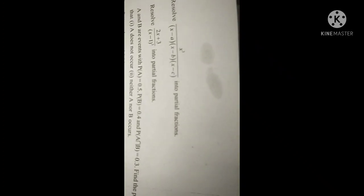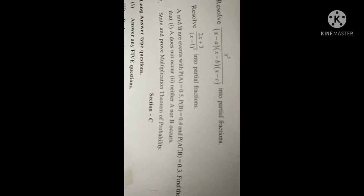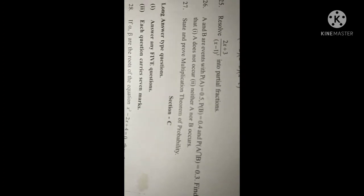Question 24: Resolve x³/[(x - a)(x - b)(x - c)] into partial fractions. Question 25: Resolve (2x + 3)/(x - 1)³ into partial fractions. Question 26: A and B are events with P(A) = 0.5, P(B) = 0.4, P(A ∩ B) = 0.3. Find the probability that A does not occur, and neither A nor B occurs. Question 27: State and prove multiplication theorem on probability.